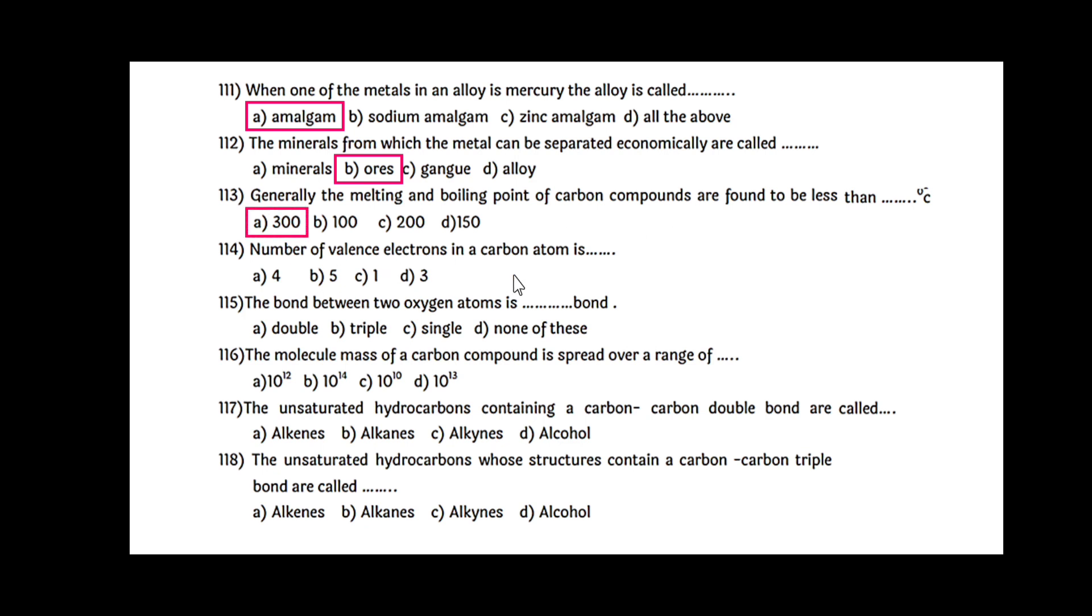Number of valence electrons in a carbon atom is 4. The bond between two oxygen atoms is always a double bond. The molecule mass of a carbon compound is spread over a range of 10 to the power 12. The unsaturated hydrocarbons containing a carbon-carbon double bond are called alkenes. The unsaturated hydrocarbon whose structures contain a carbon-carbon triple bond are called alkynes.